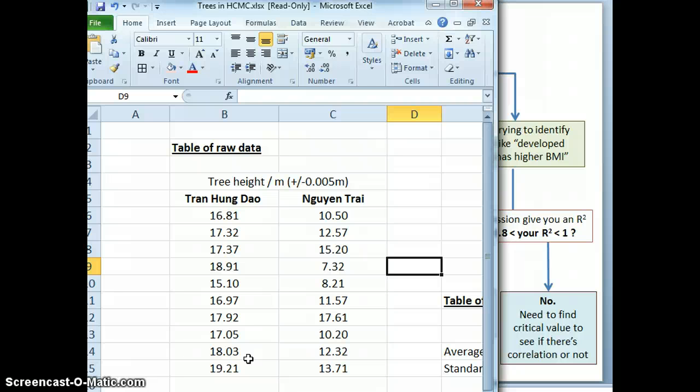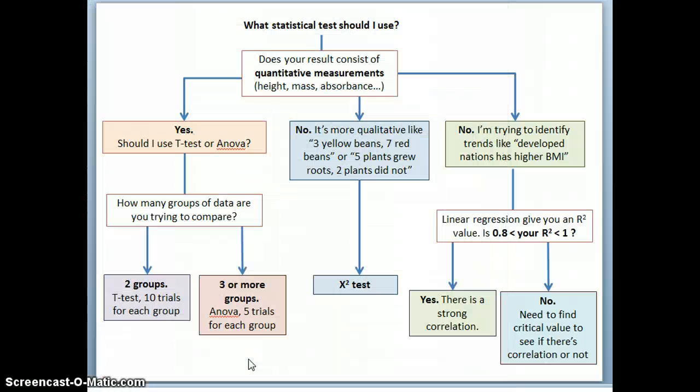Now when you design an experiment, make sure you keep this number in mind so that you have enough samples to do statistical tests. If you're going to do a t-test because you have 2 groups, make sure you have 10 trials each.